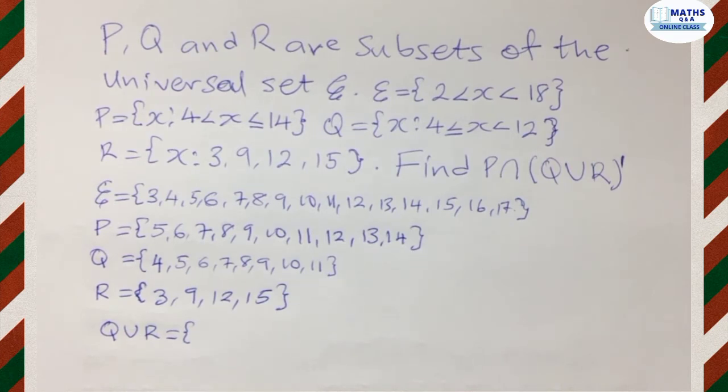Union means we're putting the two sets together. Well, if a particular number appears in both sets, we write it once. Okay. So we look at Q and R. We have 3, which is starting 4. Then we come to 5,